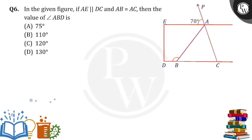Hello everyone. In the given figure, AE is parallel to DC. AE is the line parallel to DC, and AB is equal to AC, which means these two sides are equal. We need to find the value of angle ABD.